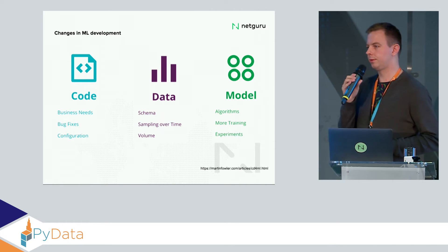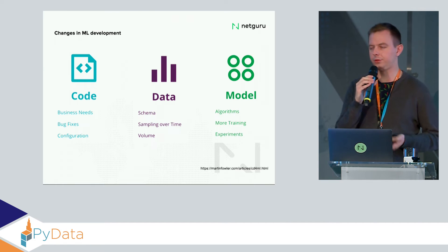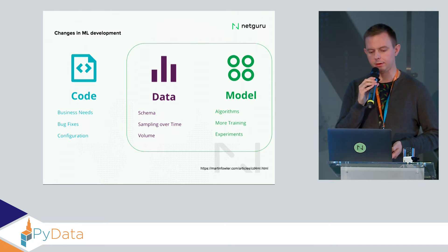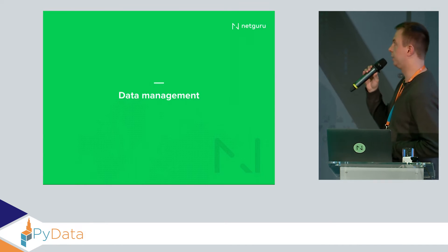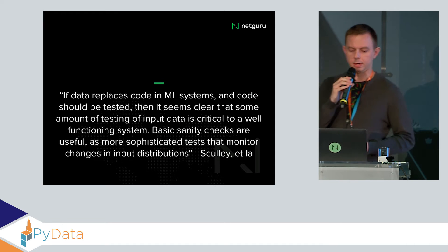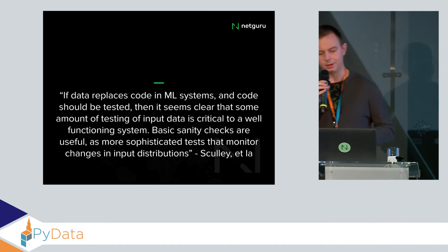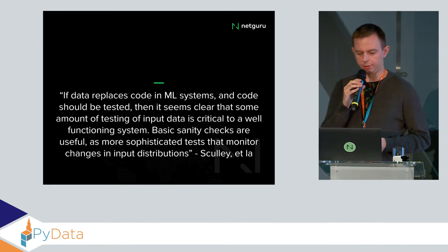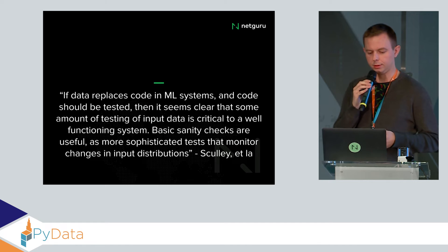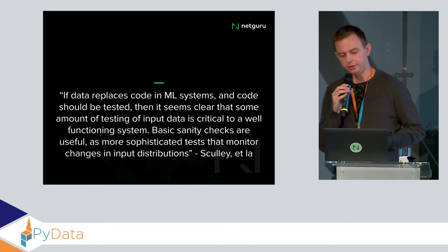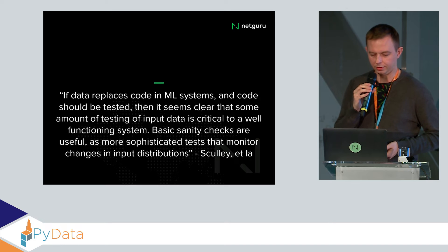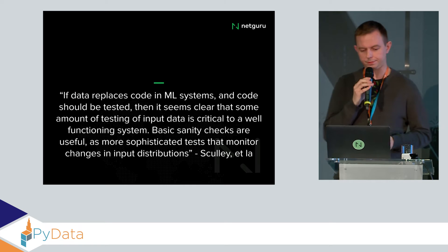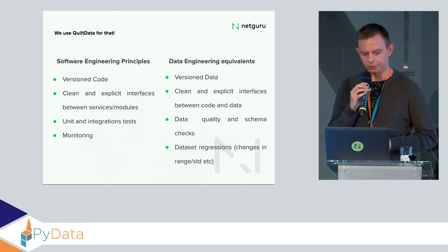The first thing I want to talk about is how we address changes in data — data management. There's a quote from a paper: 'If data replaces code in ML systems, and code should be tested, then it seems clear that some amount of testing of input data is critical to a well-functioning system. Basic sanity checks are useful, as are more sophisticated tests that monitor changes in input distributions.' So if we test code, we should also test our data.